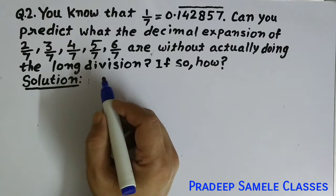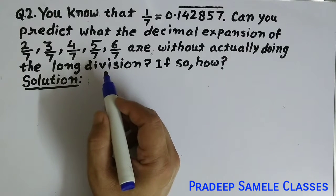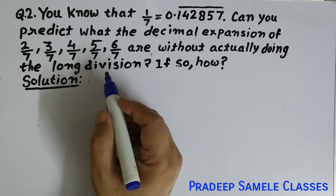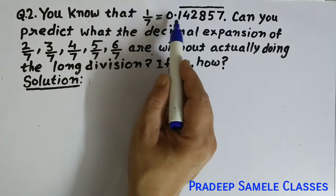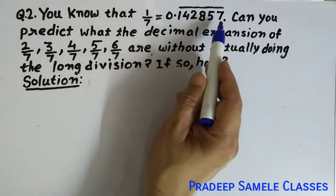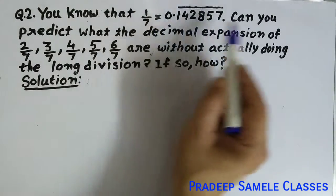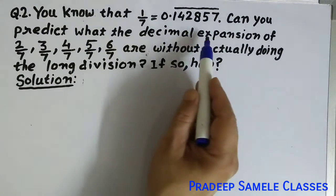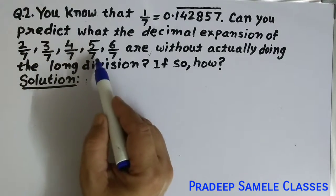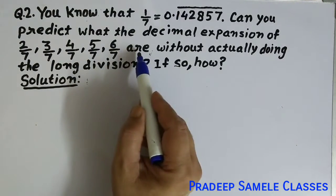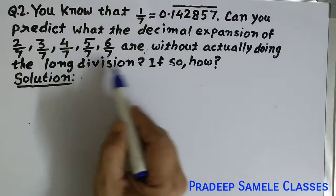Hello friends, NCERT Maths Class 9th, Exercise 1.3, Question 2. You know that 1 by 7 is equal to 0.142857 bar. Can you predict what the decimal expansion of 2 by 7, 3 by 7, 4 by 7, 5 by 7, 6 by 7 are without actually doing the long division?